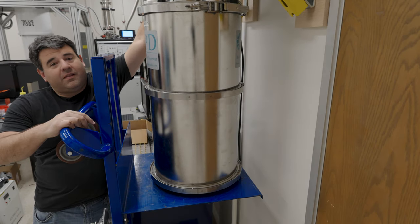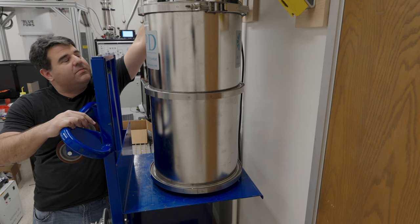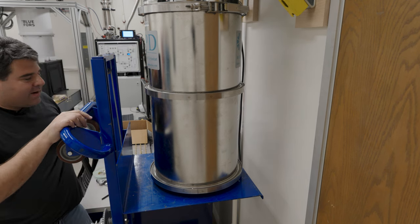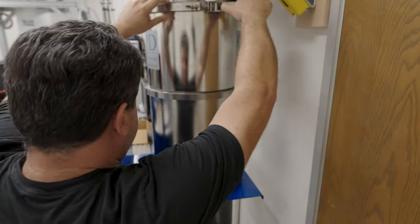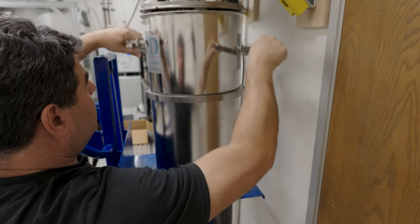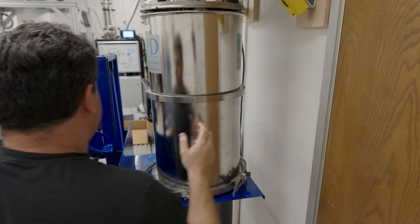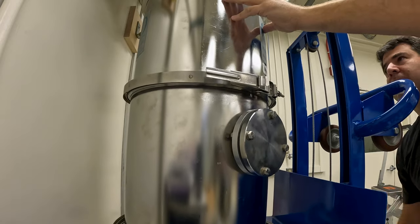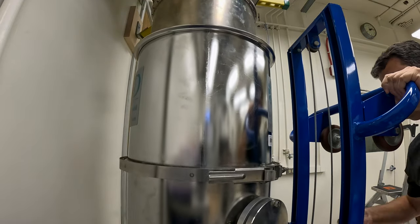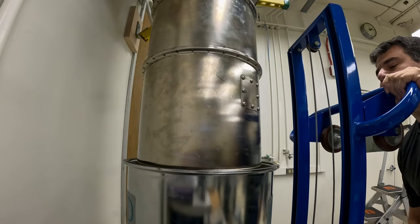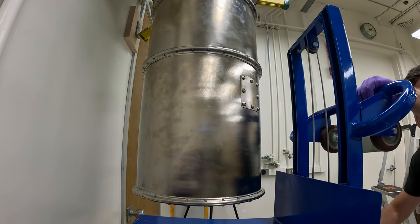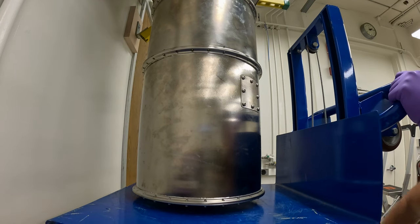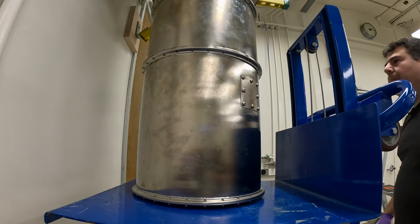So the first thing we got to do is break the vacuum and then drop the shields just like on the previous fridge. Unlike the previous fridge, this fridge is not under vacuum. So looks like this one was left with air in it. Shouldn't be a problem though.